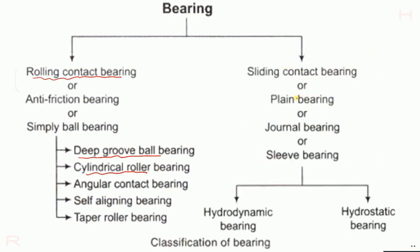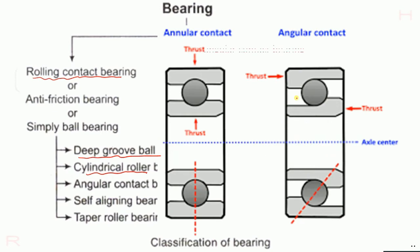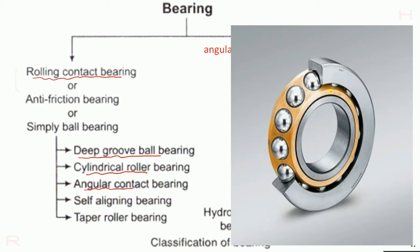Next we have the angular contact bearing. The angular contact bearing is designed based on the direction of thrust acting. The thrust acting here is vertical, and the bearing is in the middle. When thrust is acted from the side, the bearing is designed so that the thrust can be taken care of.